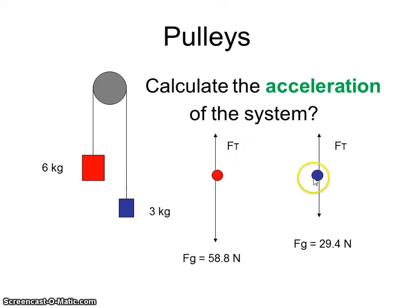What about the blue guy? Blue guy has a downforce of 29.4. I got that by taking 3 times 9.8. Got a tension force going up. Again, don't know what this value is. We're going to calculate that.